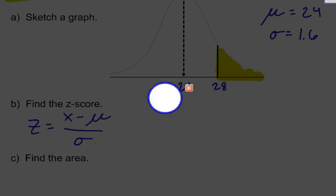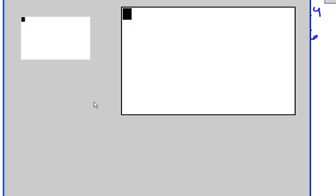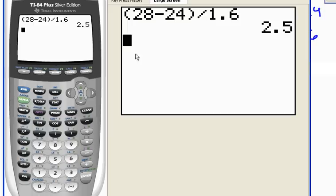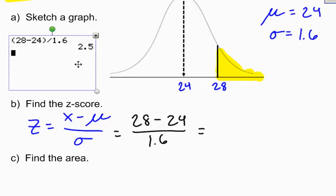μ is 24, and σ, my standard deviation up here, is 1.6. So I can plug everything into my formula. x is 28, that's the value I'm concerned with. 24 is μ, and the standard deviation is 1.6. Let me go ahead and grab my calculator and let's figure this out. So here we go: 28 minus 24 divided by 1.6 gives me 2.5. So pull that over here just so we can see it. There's my z-score of 2.5.